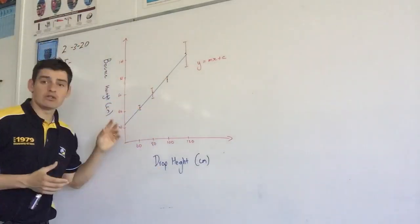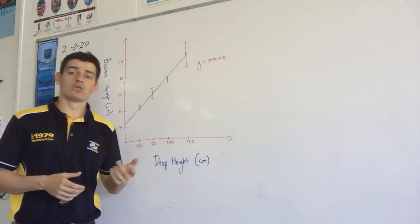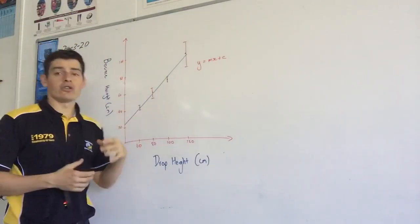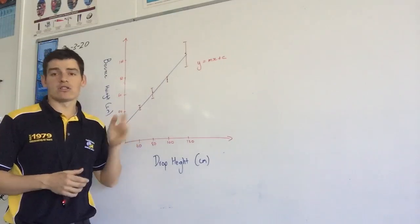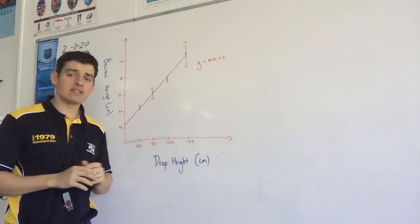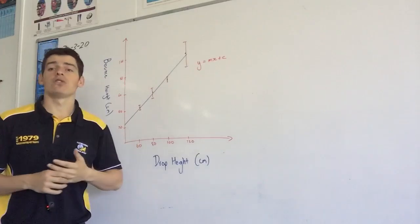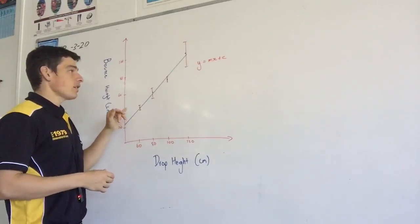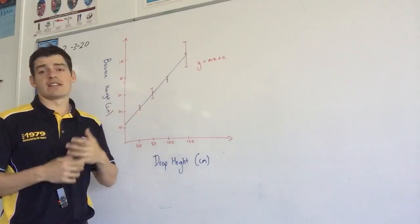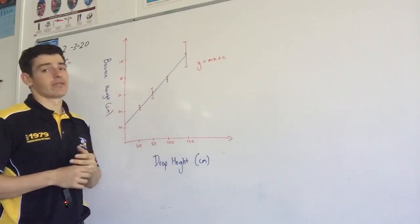You can represent that graphically using error bars. If you look at the Google Sheets video that I put up, that will show you how to create those error bars. Your function should lie inside those error bars. If it doesn't, it's not a big deal. It's just something to talk about in your discussion and your analysis of your investigation.